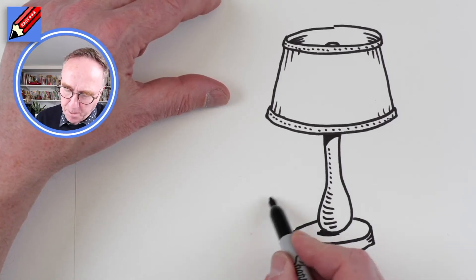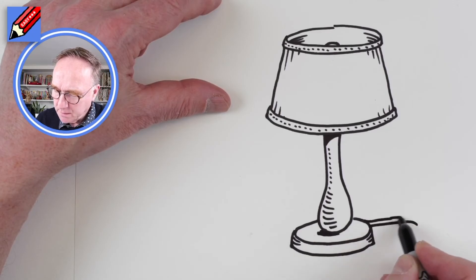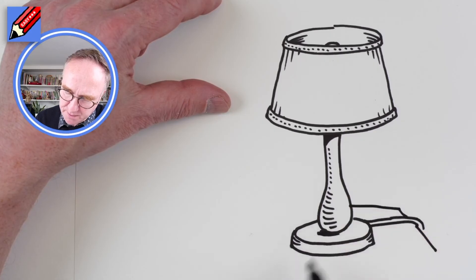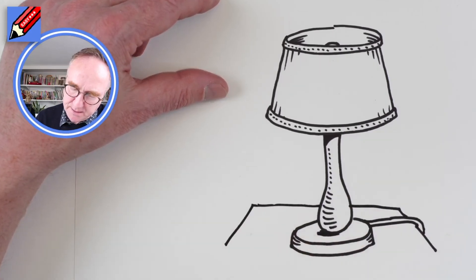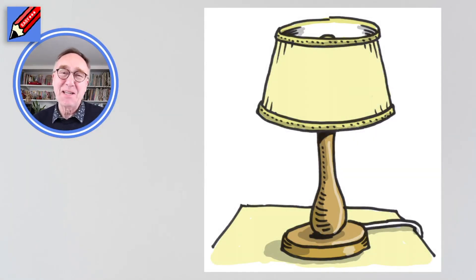A bit of shadow there. And then we're going to want to have the cable going over the side. So let's put it on the table, with a table like that. And there you go, how to draw a lampshade real easy. Thanks for watching.